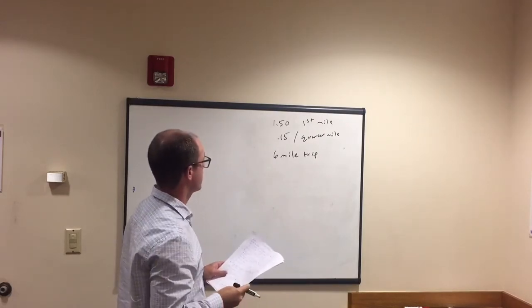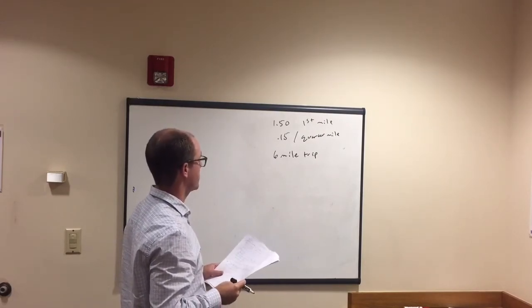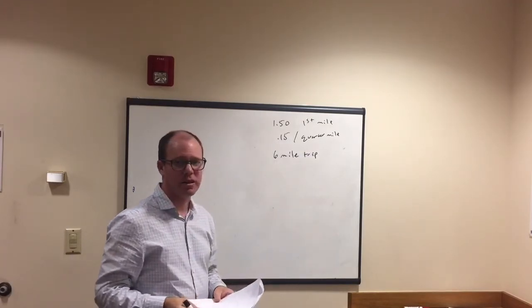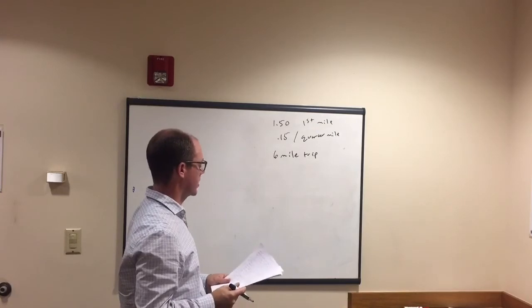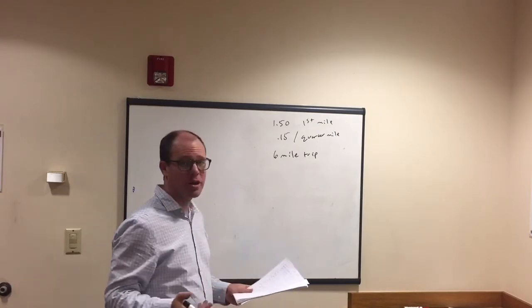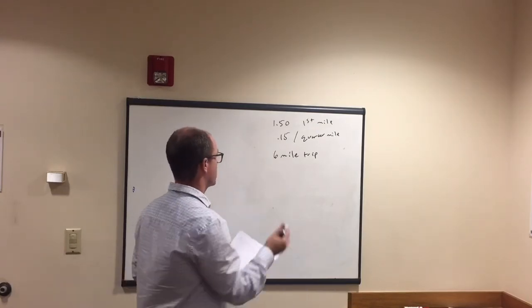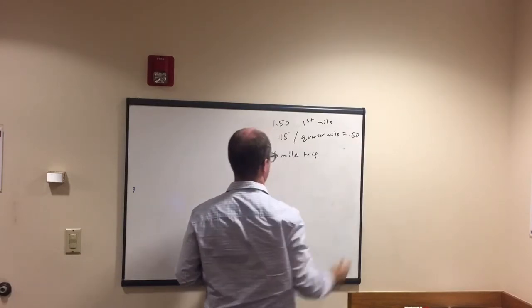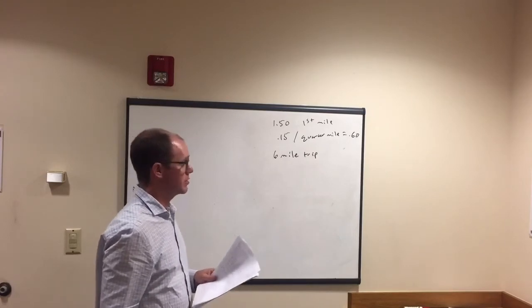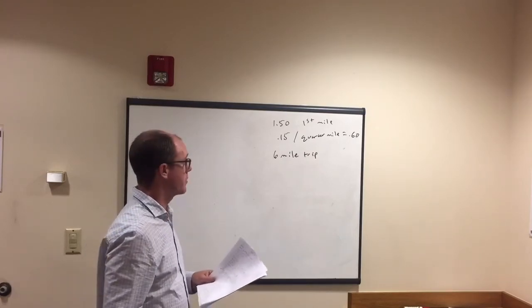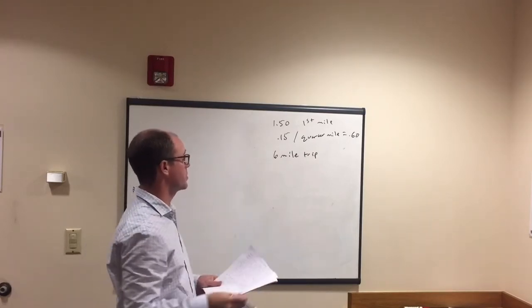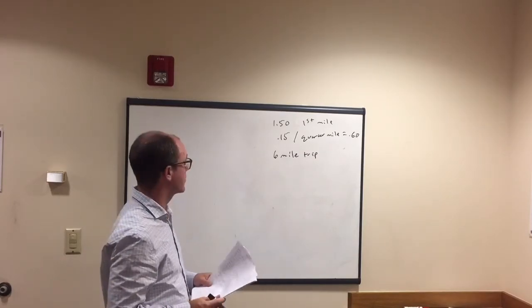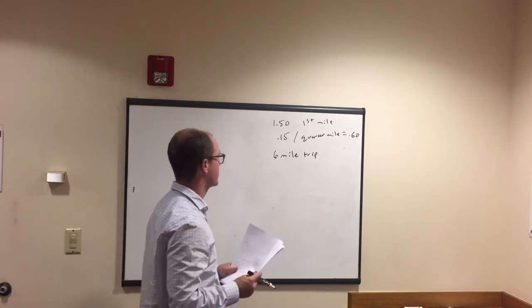How are we going to go about solving this? So first of all, we'd like to get rid of this quarter mile thing. Not that different from what we did with the rate question just a second ago. So, if it's $0.15 for a quarter mile, then it's going to be $0.60 per mile. So $0.15 times four. And that equals $0.60.